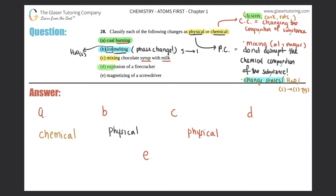D: Explosion of a firecracker. When you explode something, that's definitely a chemical change - you change the composition of the firecracker into something completely different. So this would be a chemical change.